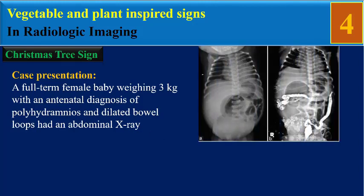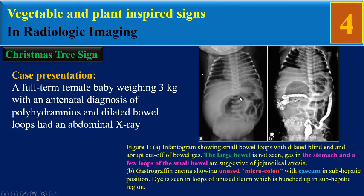On abdominal X-ray, this infantogram shows small bowel loops with dilated blind and abrupt cut-off of bowel gas. The large bowel is not seen, and gas in the stomach and a few loops of small bowel are suggestive of a proximal ileal atresia. The gastrographic enema shows an unused microcolon.